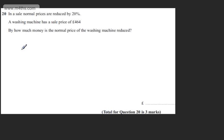This is question number 20. It says in a sale, normal prices are reduced by 20%. A washing machine has a sale price of £464. The question says by how much money is the normal price of a washing machine reduced? The question carries 3 marks.